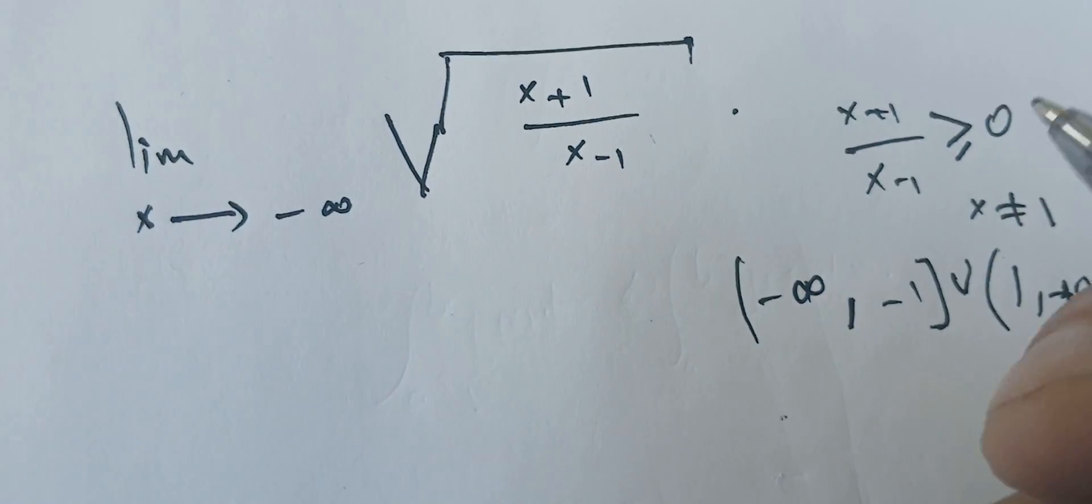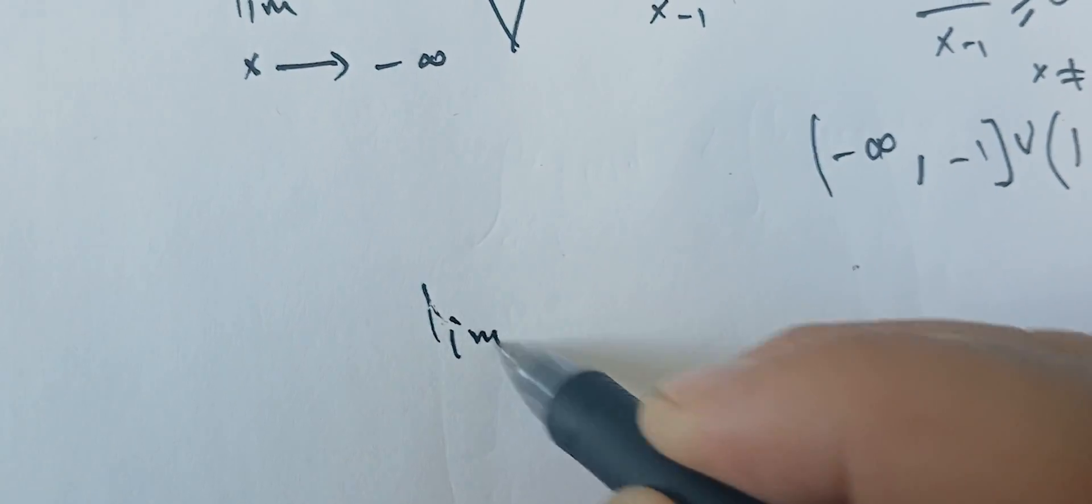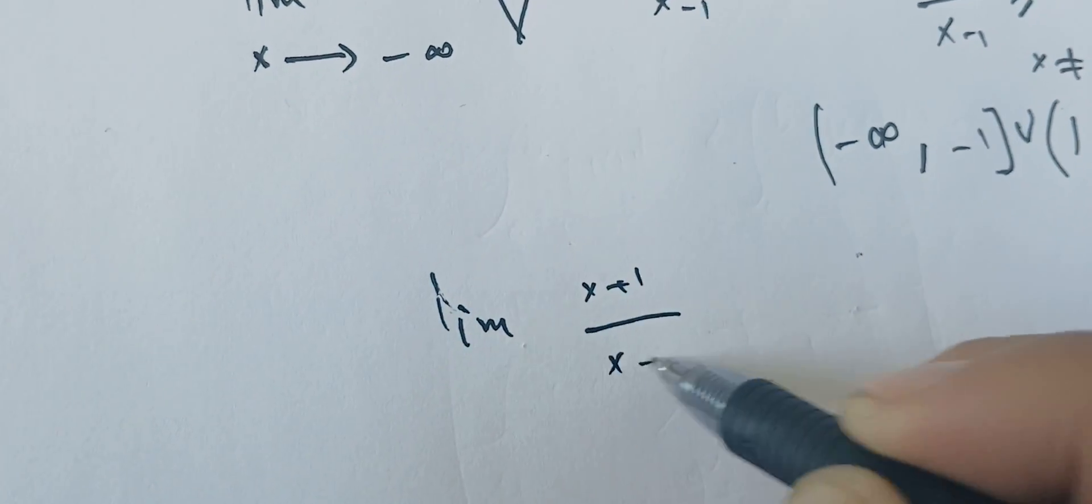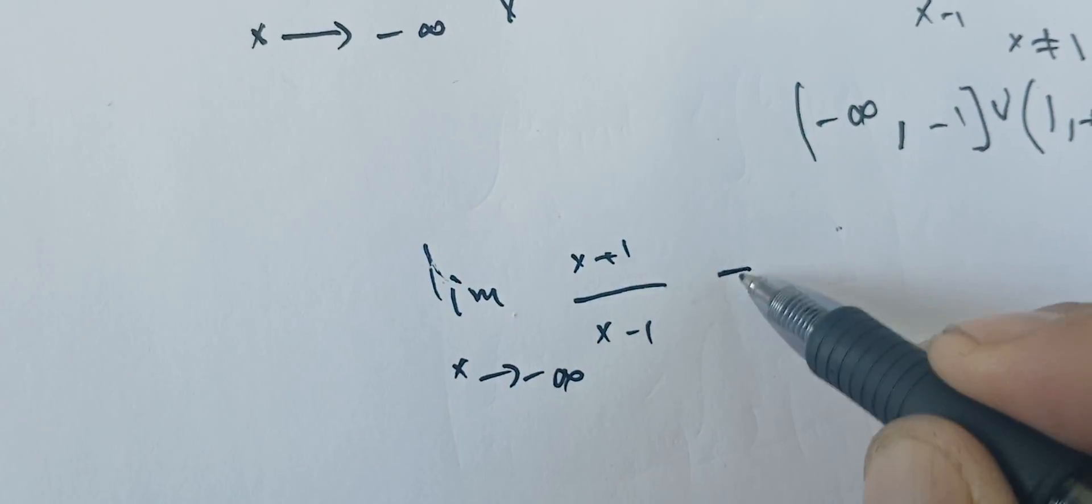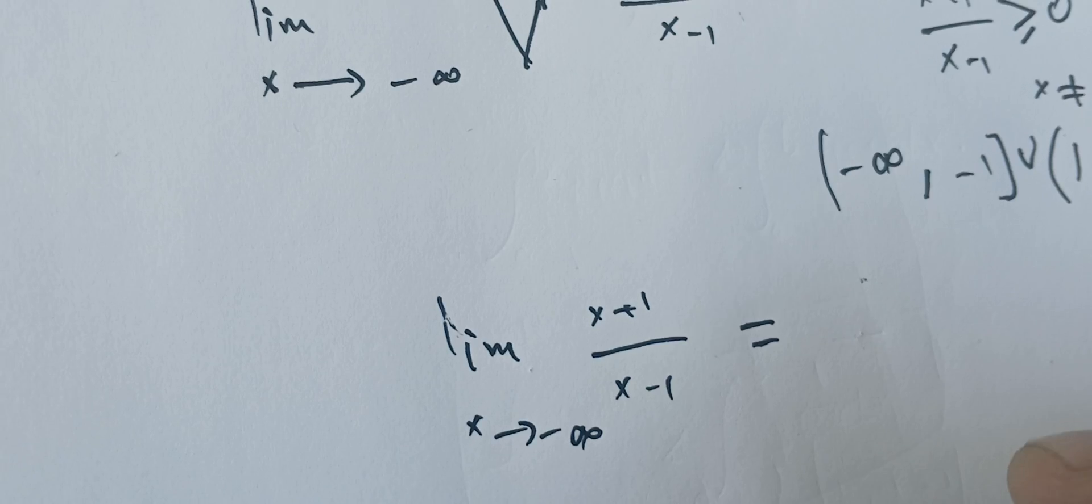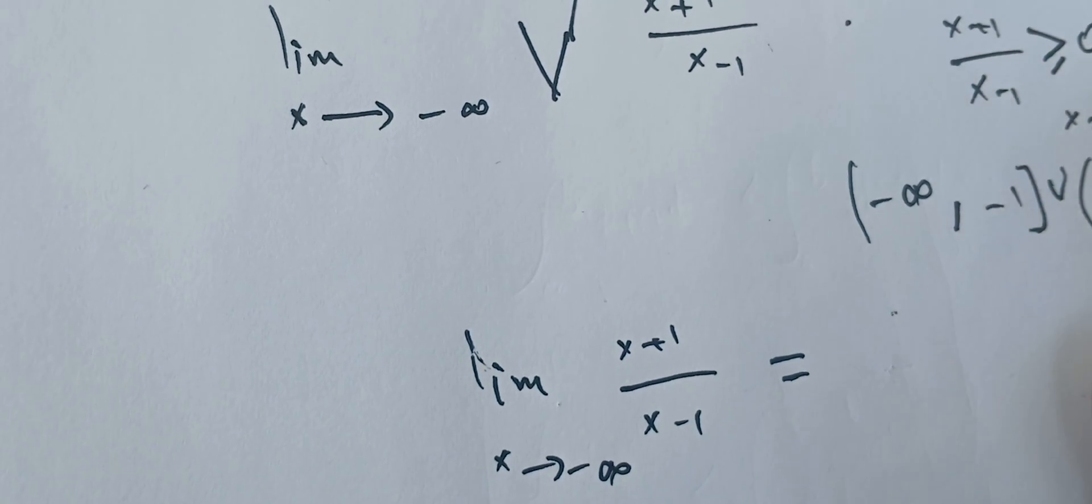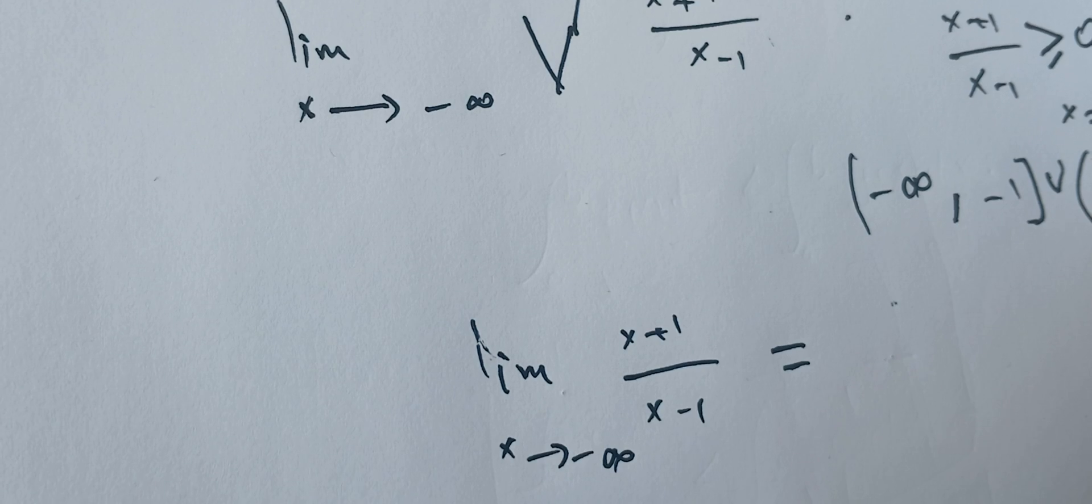Here, the limit of x plus 1 over x minus 1 as x goes to minus infinity—we can compute this one using L'Hopital's rule or using the ratio.